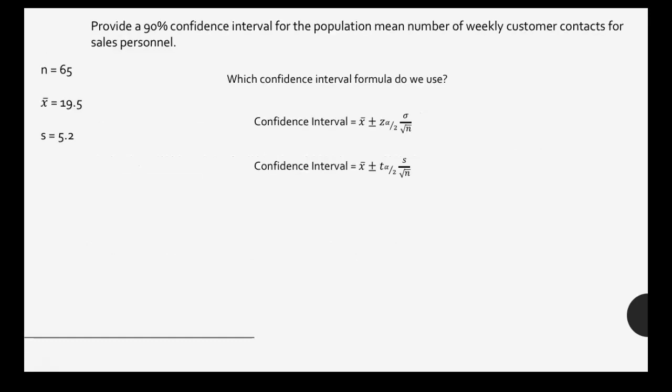Now we can talk about confidence intervals. If you look on your formula sheet, you'll notice there are two different formulas for the confidence interval for the mean. The difference is one uses a z-score and the other uses a t-score. What we can do is try to prove that we can use z-scores — prove that it's normally distributed.